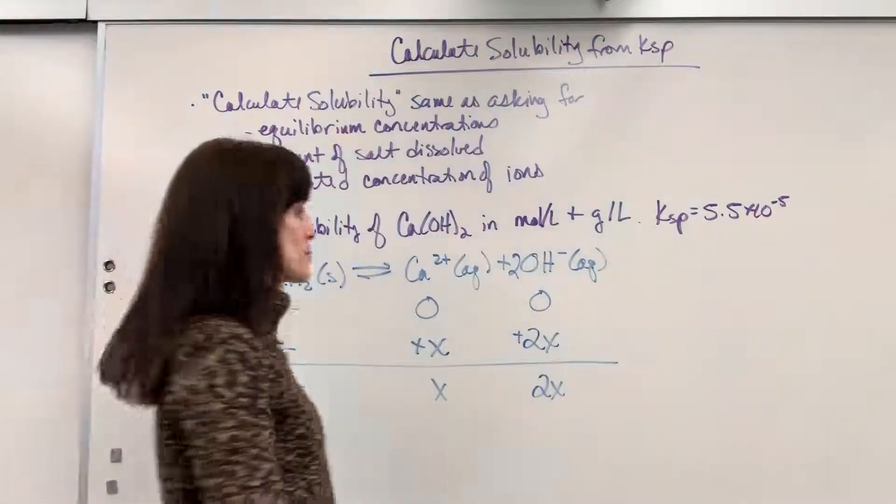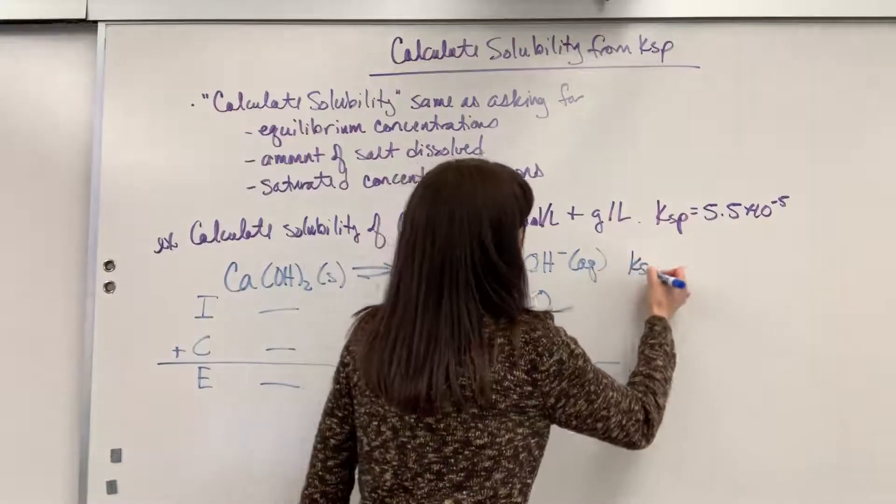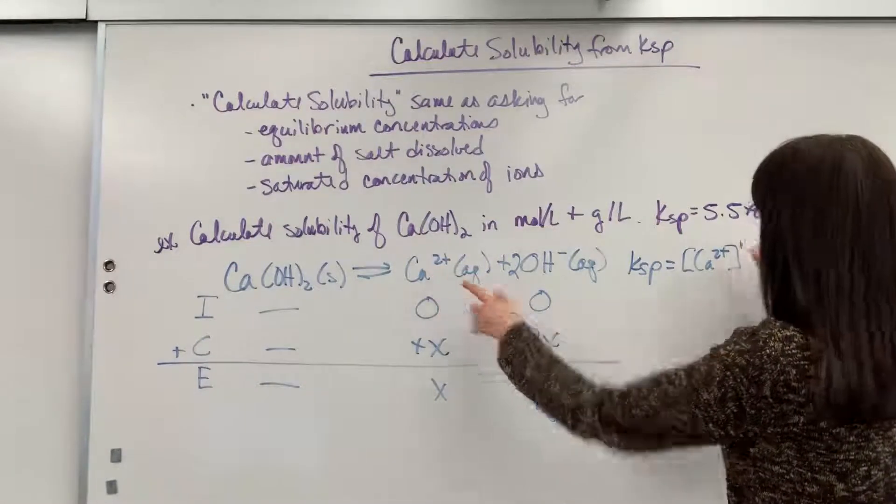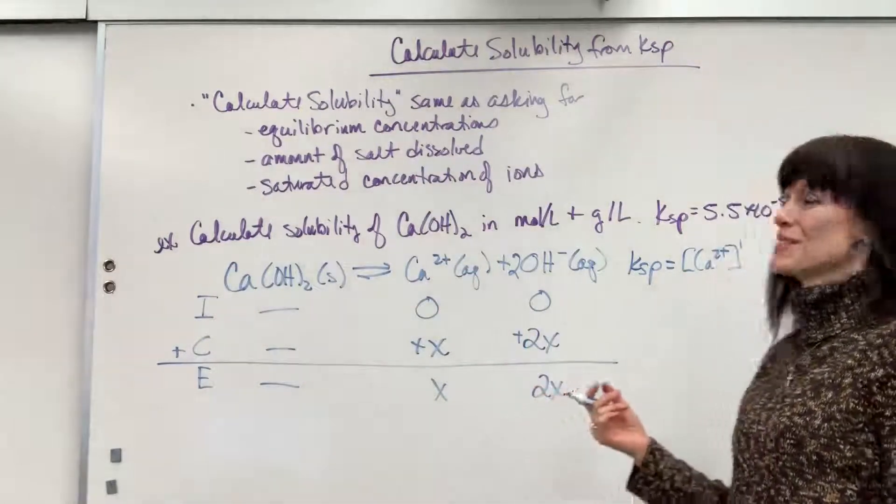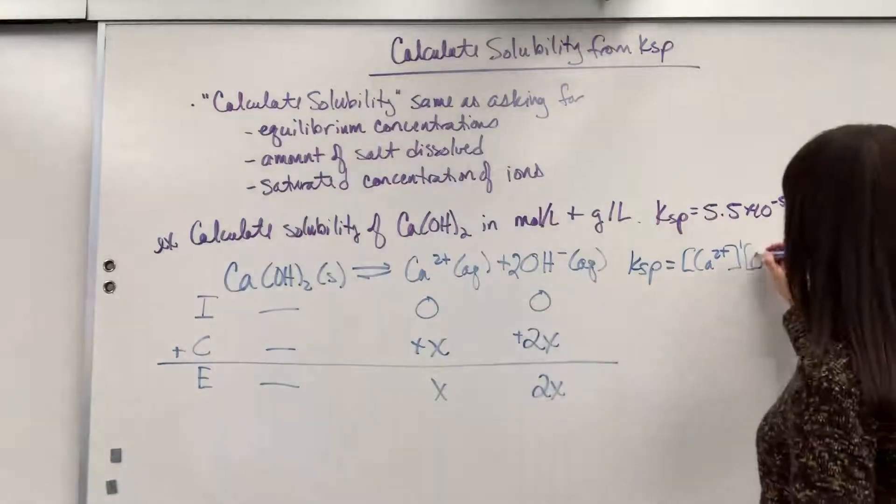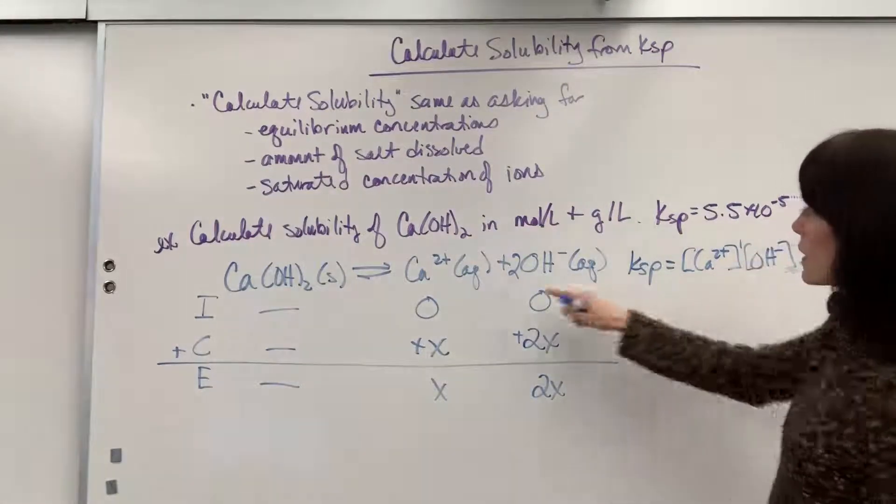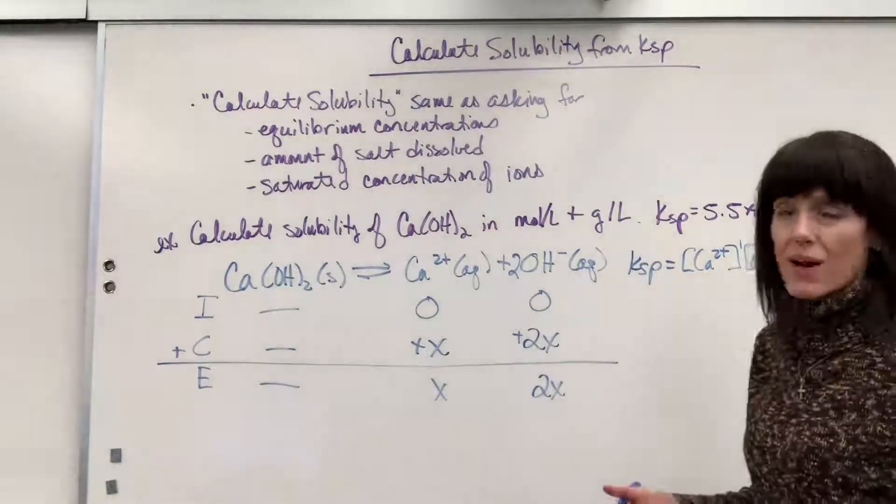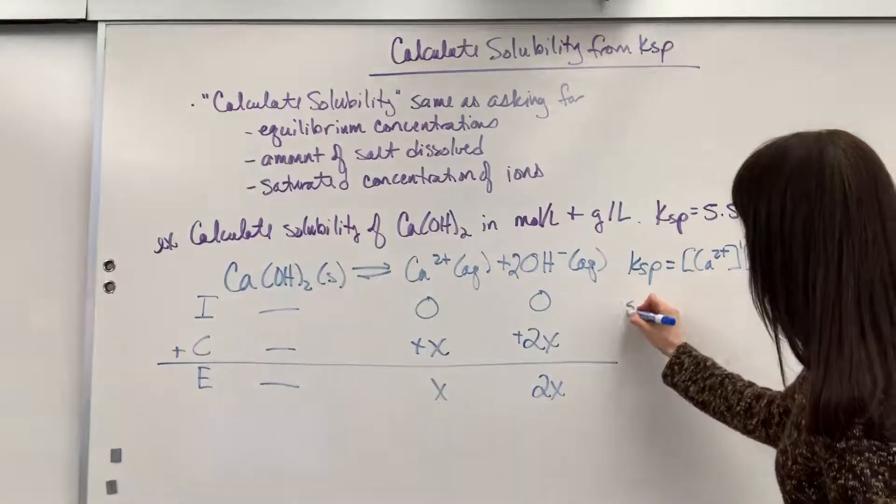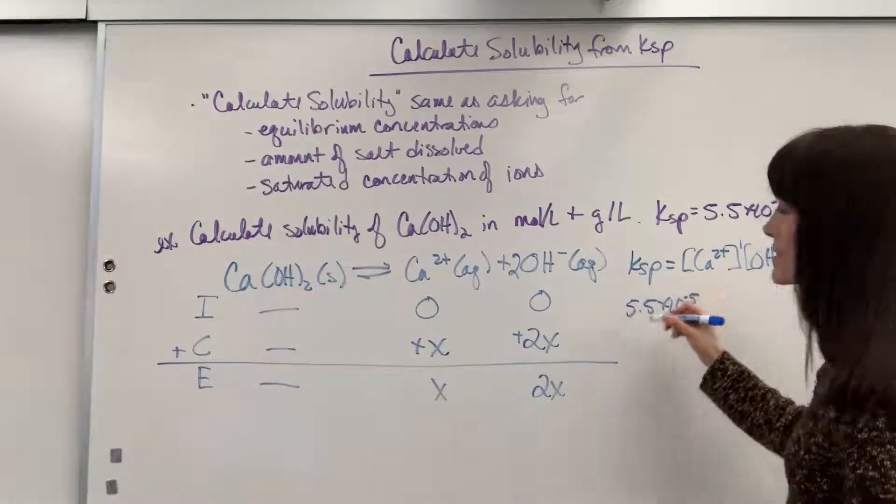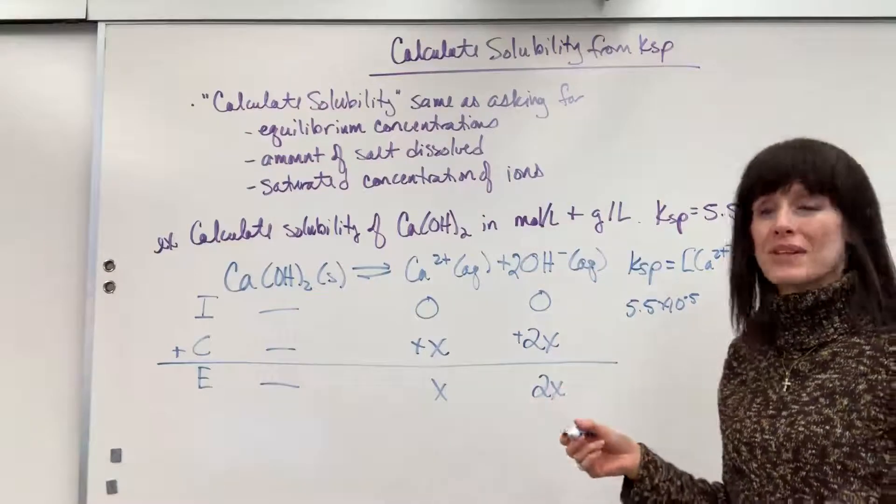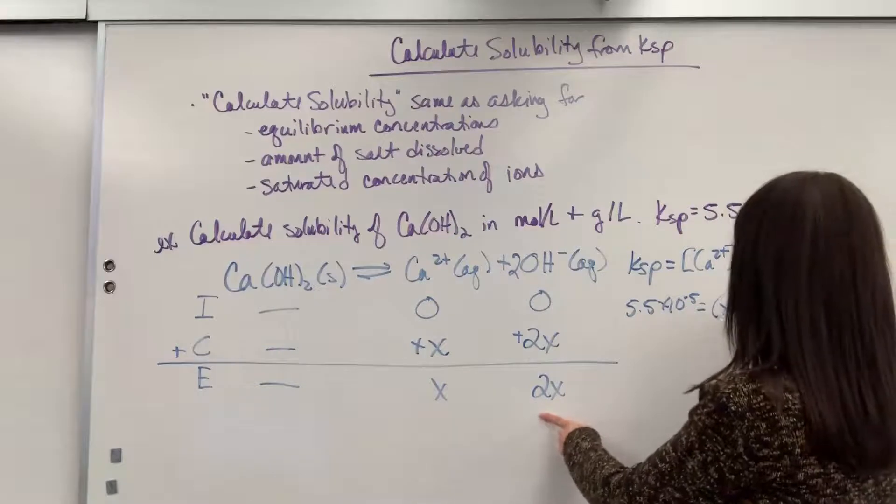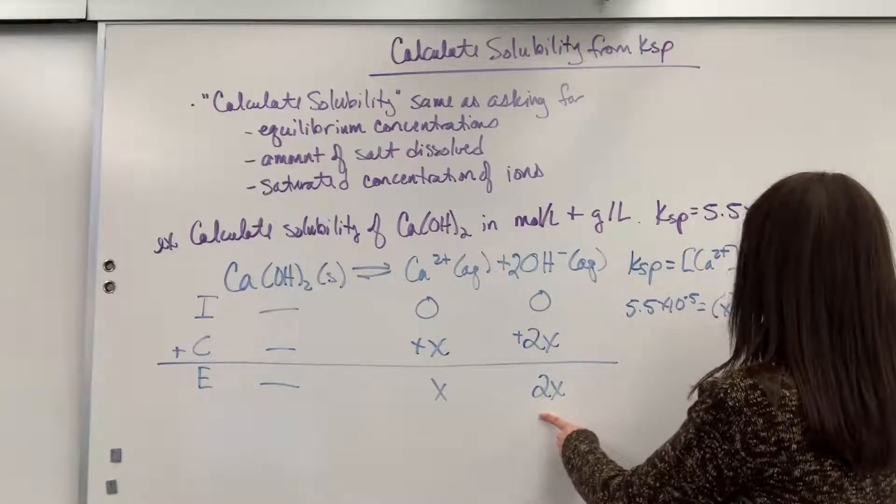Now let's go ahead and write the equilibrium expression. So we're going to get Ksp equals products. That's going to be your calcium ion raised to the first power times the concentration of hydroxide, and be really careful—what's that coefficient? A 2. So that's going to be squared. Now we can plug in all of our numbers. We are going to have the 5.5 times 10 to the minus 5, that's the Ksp from the solubility table, equals calcium is x, the hydroxide is 2x and that's squared.